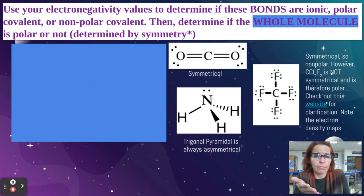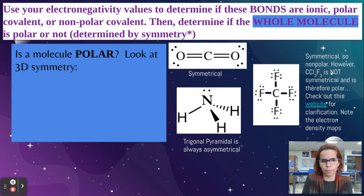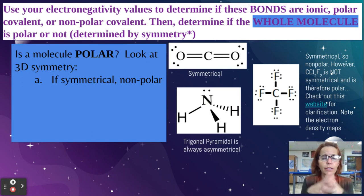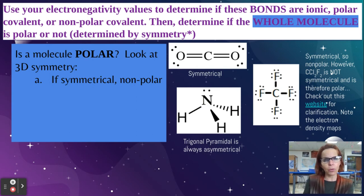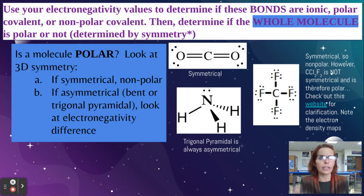So that's just the bonds. Now let's look at the molecule itself and determine if the molecule is polar or nonpolar. It says: is a molecule polar? Look at the 3D symmetry. This is why we've been doing the VSEPR models and building the models. If the molecule is completely symmetrical, then no matter what the bonds are, the molecule is nonpolar. However, if the molecule is asymmetrical — bent and trigonal pyramidal are always asymmetrical — then we're going to look at the electronegativity difference to determine whether it's polar or nonpolar.